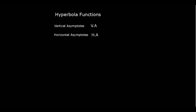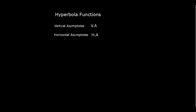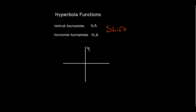Hi Grade 12s, today we are going to be looking at the hyperbola functions or hyperbola graphs. We are going to be looking at the vertical asymptotes, which is VA, and the horizontal asymptotes, which is HA. The idea is just simple — it carries the idea of shifting in a Cartesian plane. A Cartesian plane is just two lines that cross — the y-axis and x-axis — and it is the most important tool used to draw different graphs.